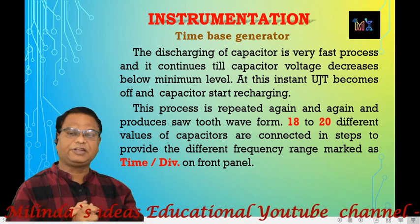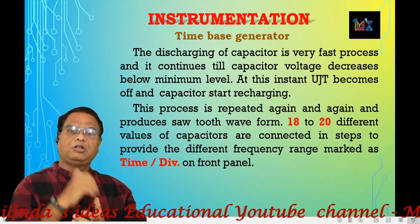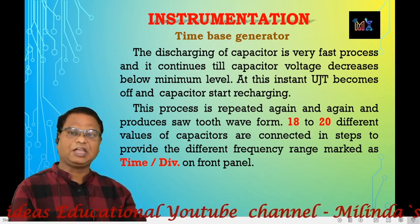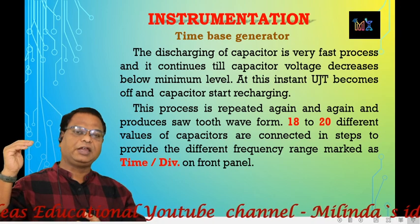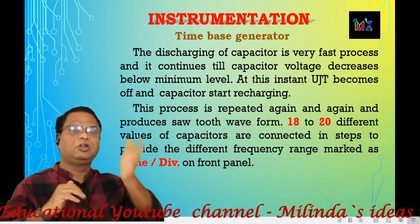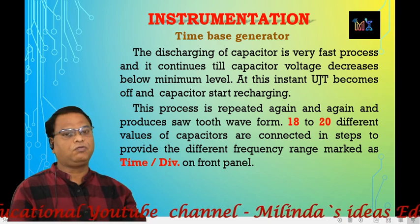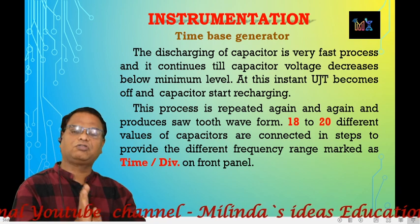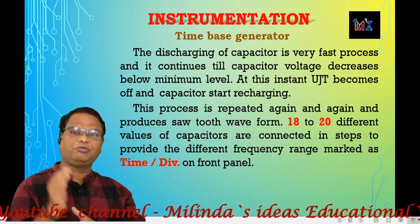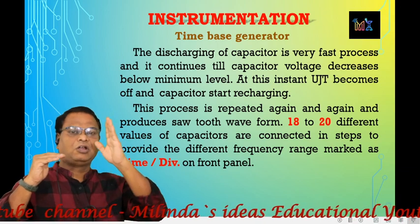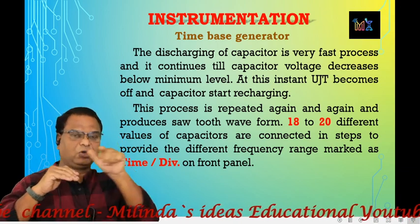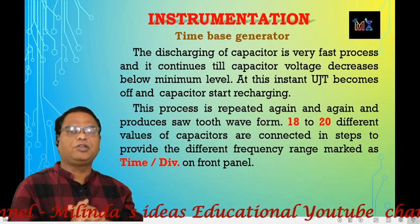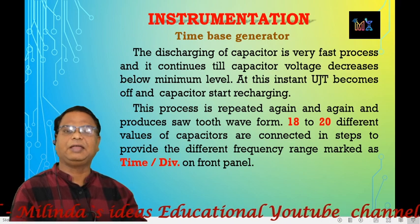That is the time-based generator. In the time-based generator, we use a unijunction transistor which works as a true electronic switch. To summarize: this generator generates the horizontal signal which causes electrons to move along the x-axis. The line in the middle of the x-axis is known as the baseline, and along that axis we measure time — that is why this generator is known as the time-based generator.